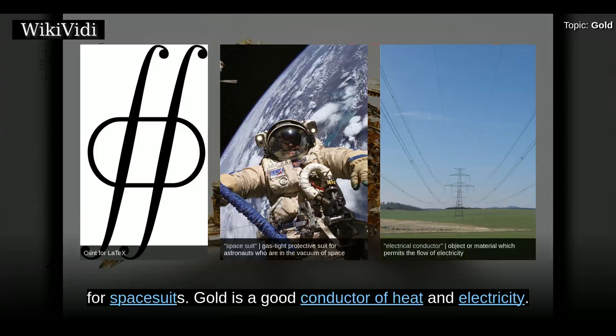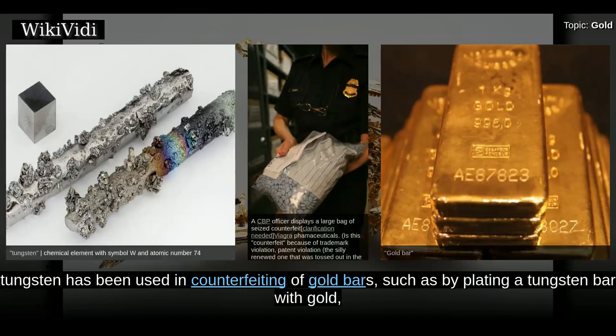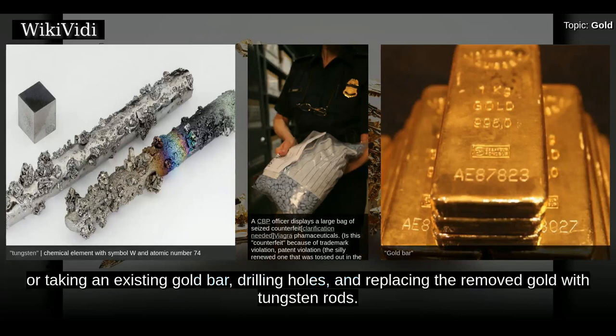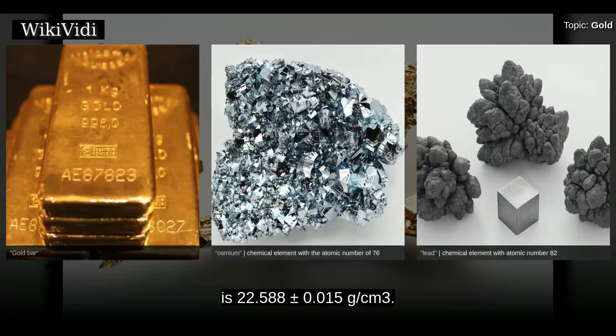Gold is a good conductor of heat and electricity. Gold has a density of 19.3 grams per cc, almost identical to that of tungsten at 19.25 grams per cc. As such, tungsten has been used in counterfeiting of gold bars, such as by plating a tungsten bar with gold, or taking an existing gold bar, drilling holes, and replacing the removed gold with tungsten rods. By comparison, the density of lead is 11.34 grams per cc, and that of the densest element, osmium, is 22.588 ± 0.015 grams per cc.